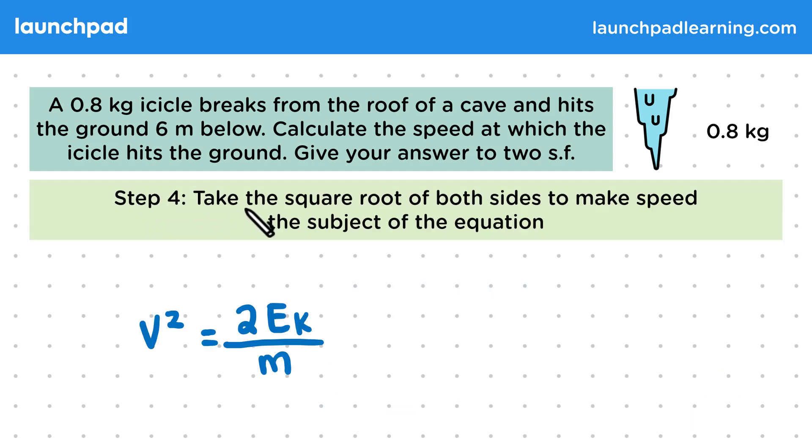For step four, let's take the square root of both sides to make speed the subject of the equation. So it was important to bring v squared to one side first, as we must take the square root of the whole side, not just one term. So that becomes v is equal to the square root of 2EK divided by m.